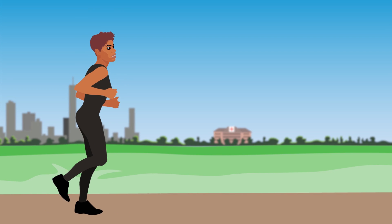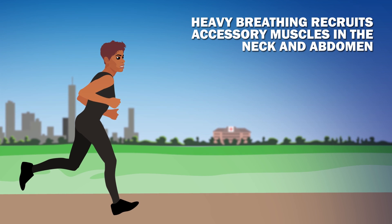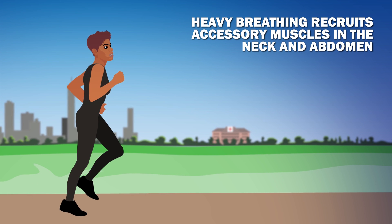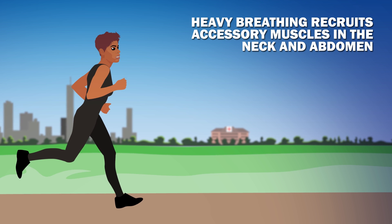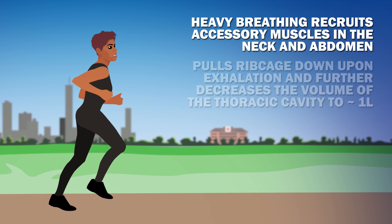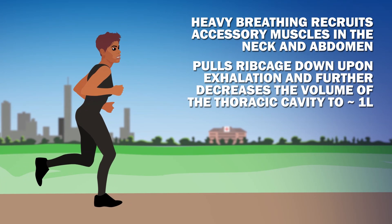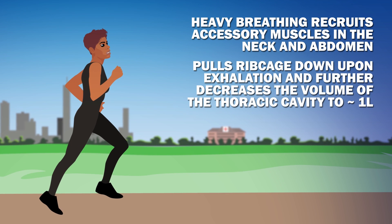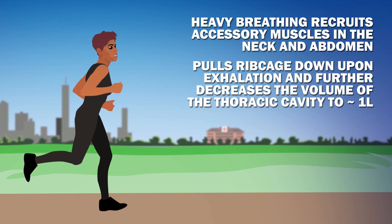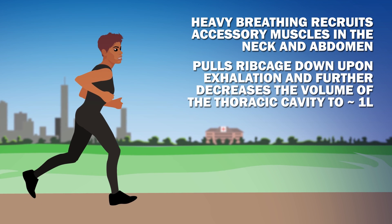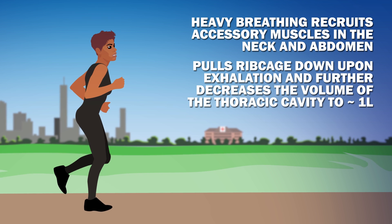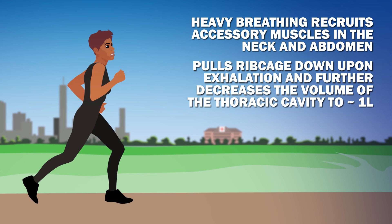When you are exercising, heavy breathing recruits accessory muscles in the neck and abdomen, pulling the ribcage down upon exhalation, and further decreasing the volume of the thoracic cavity to around 1 liter.